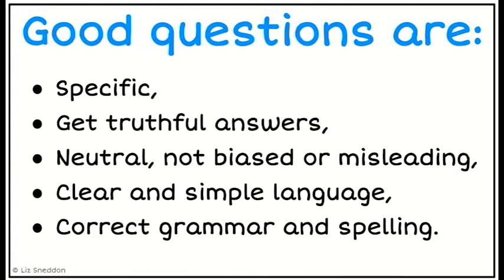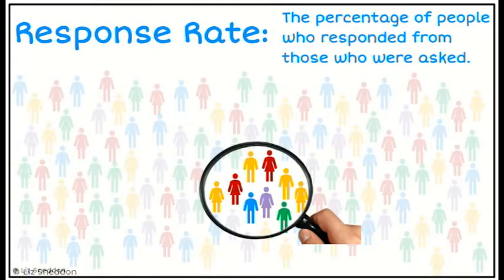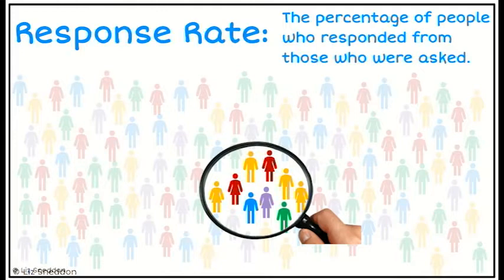We also want to have good grammar and spelling. One of the concepts is about response rate. If I've got my target population — the people I'd like to gather information from — then I look at those I actually collect data from. That response rate is the percentage of those who responded out of everyone I asked.